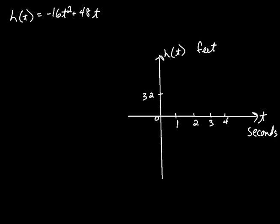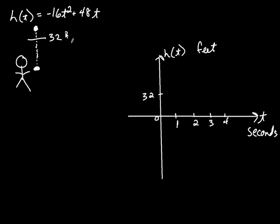Let's analyze what this problem represents. The height of our ball is negative 16t squared plus 48t. What's happening is you're sitting there, taking a ball and throwing it up into the air. The ball reaches some maximum height. Let's say 32 feet is a certain height — the ball went up and crossed 32 feet on the way up after one second, reached its maximum, then started falling back down and crossed 32 feet again on the way down. So the ball was at 32 feet twice: once on the way up and once on the way down.